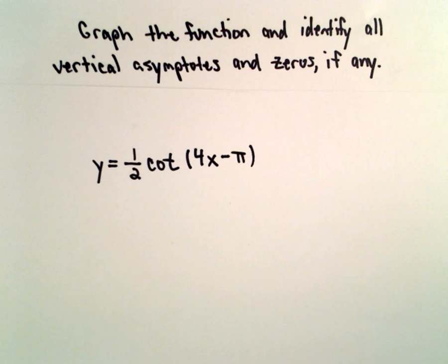Okay, here we're going to graph the function y equals one-half cotangent of the quantity 4x minus pi. And I'm going to do this in a couple steps.